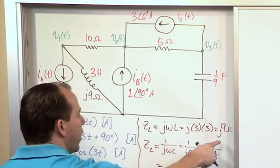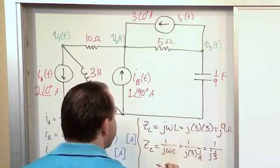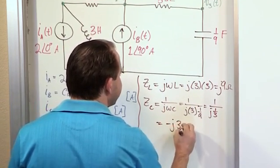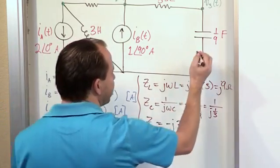And so when you compute it, one over one third, you flip it over, you're going to get a three, but when you move the J to the top, it'll end up being negative J, so we have negative J three ohms. And that's the value of this capacitance in terms of its impedance.